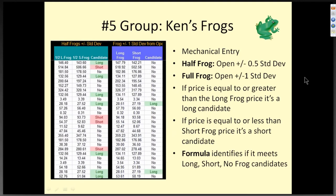Group five — we have Ken's frogs. It's a mechanical entry and I used to have to draw all kinds of stuff all over my chart to figure out if the frog was happening, so I incorporated it into my spreadsheet. The first section is a half frog — it's plus or minus half a standard deviation. Then the full frog — plus or minus one standard deviation. I have it set up so that if you look in the candidate column, it'll tell me right off the bat if it's a long or short candidate. If it doesn't meet either criteria, it'll just say no.